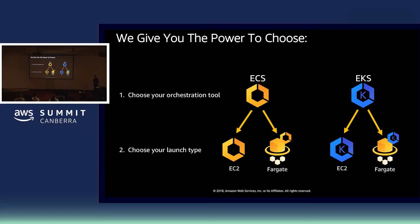Fargate lets you deploy, schedule, manage, and run containerized applications without needing to worry about provisioning, configuring, managing, or scaling clusters of EC2 instances. That capability currently exists with ECS, or Elastic Container Service, and over time we expect to bring that same capability to our managed Kubernetes service, EKS.